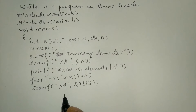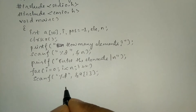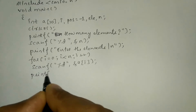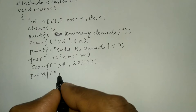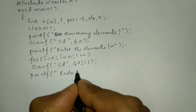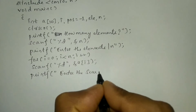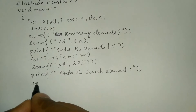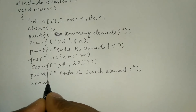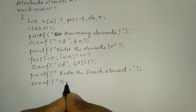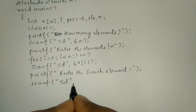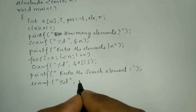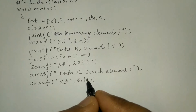Once we receive all the elements, we have to ask the user to enter the search element using a printf statement. So here I write printf with enter the search element in double quotation marks, then use a scanf statement to get the response from the user, writing %d format specifier with ampersand of element, and put a semicolon.